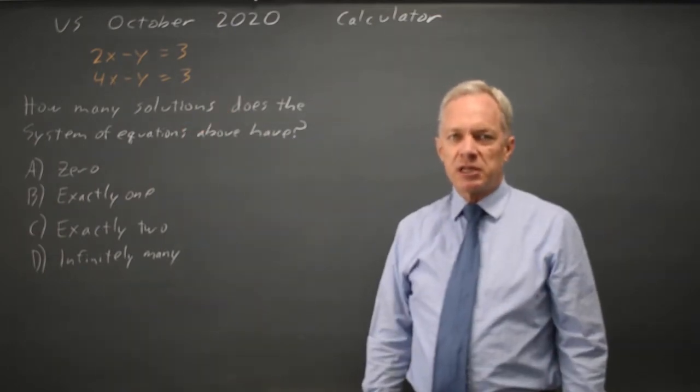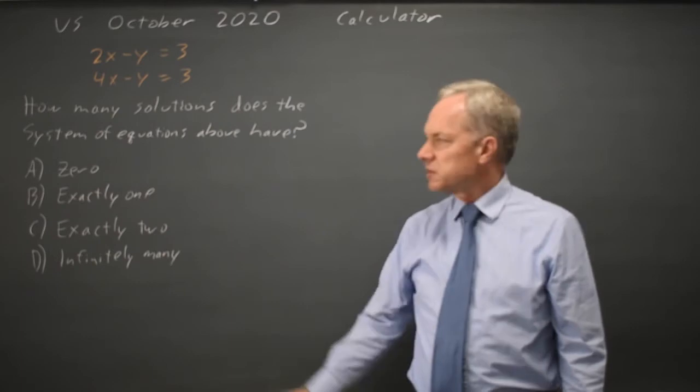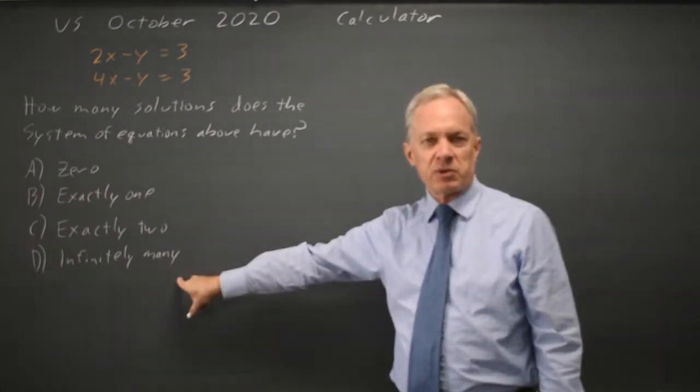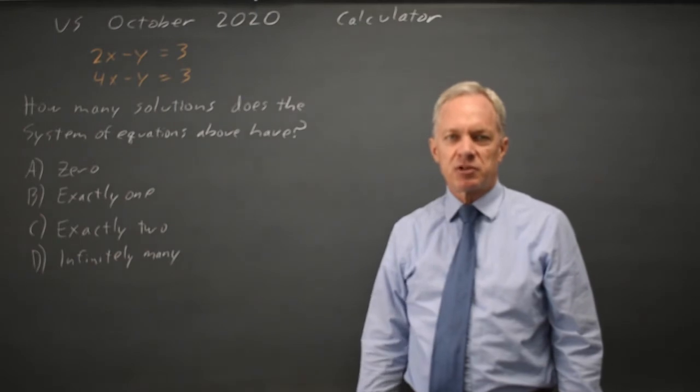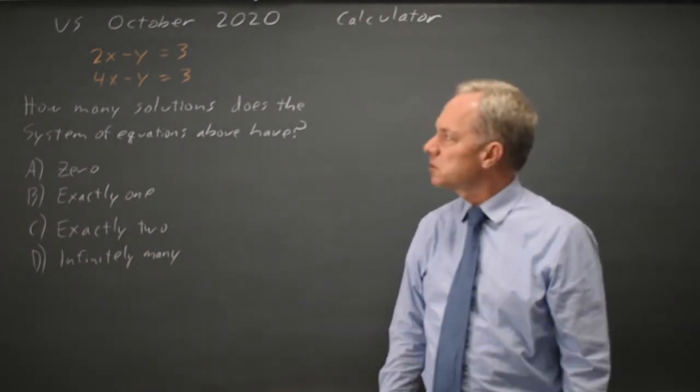If two equations in the plane have the same slope, there are zero or infinitely many solutions, depending on whether they have the same intercept. If two equations have different slopes, there is always one solution.